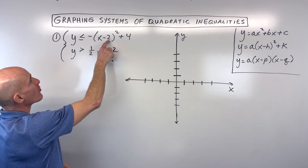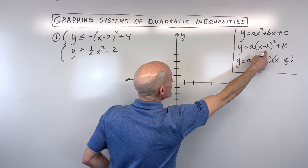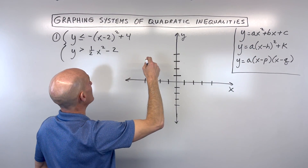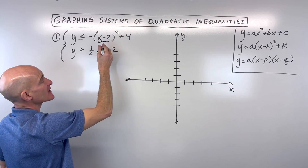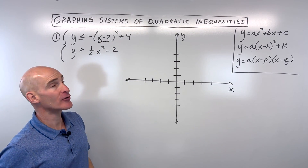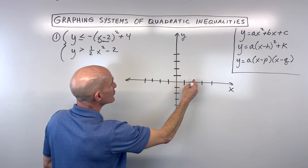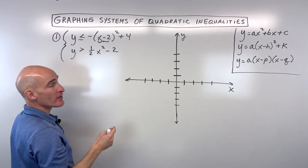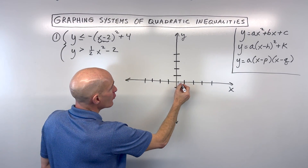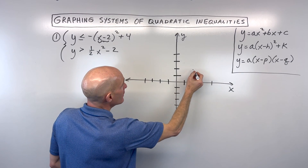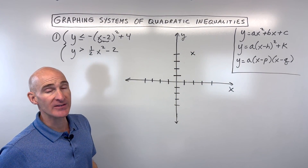This first inequality is in the vertex form, and we can see that our vertex is at h, k. Remember that the number here that's grouped with the x has the opposite effect on the graph, so minus two means it's actually going to shift it to the right two. The plus four has the same effect — it's going to shift it up four. So if we go right two, up four, that's our vertex, and that's where the graph bends.